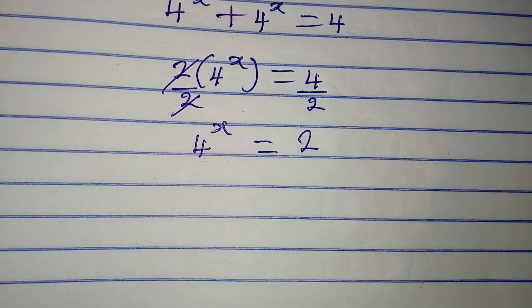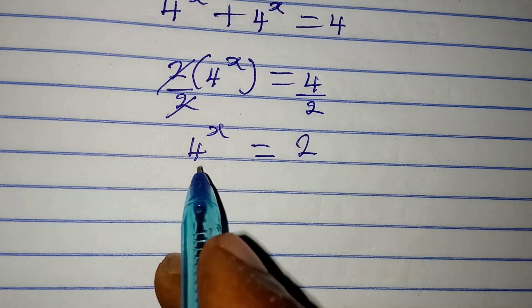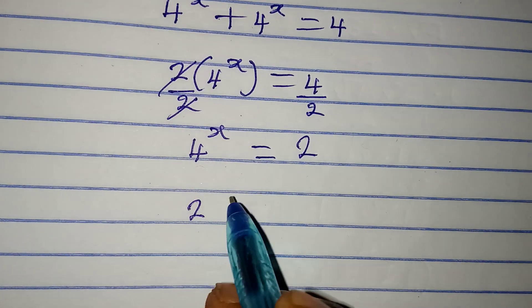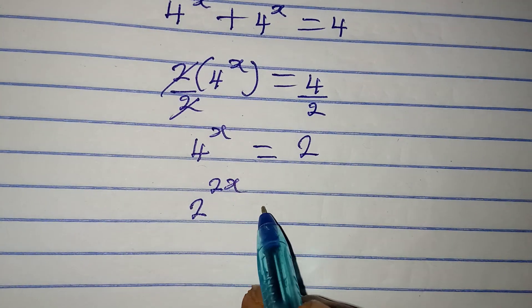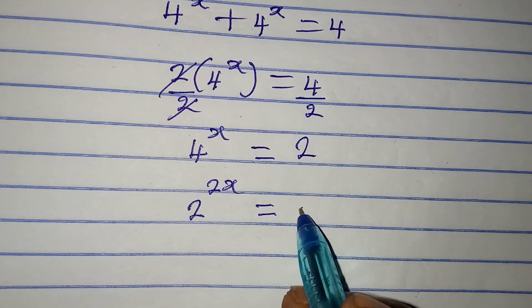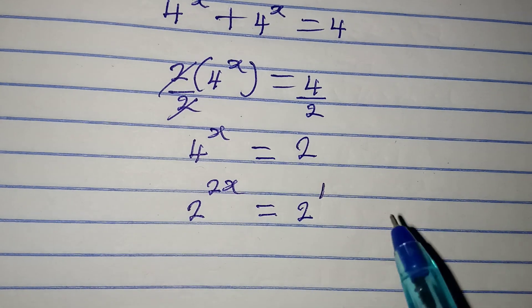Now our next target is to make sure we have the same base. 4 here is the same thing as 2 to the power of 2, then multiply by x, and this is equal to 2 here is the same thing as 2 to the power of 1.